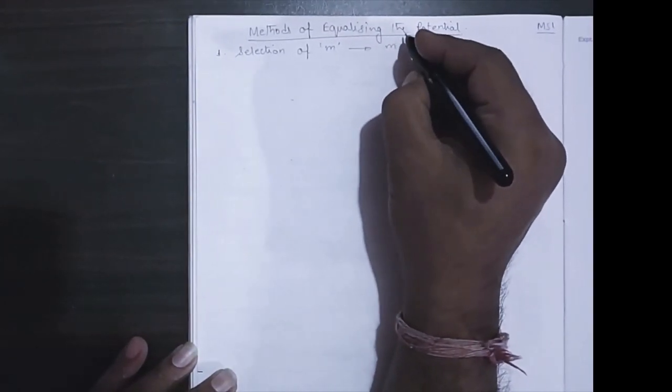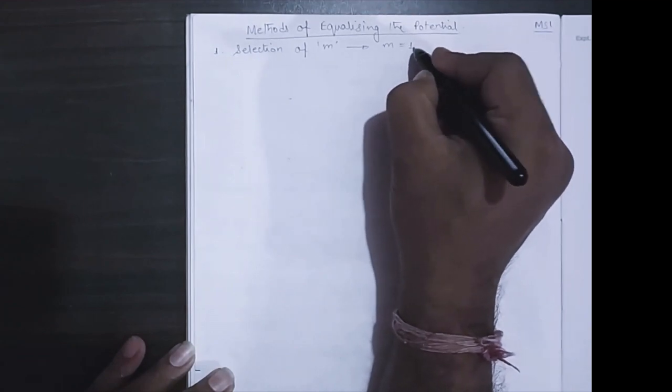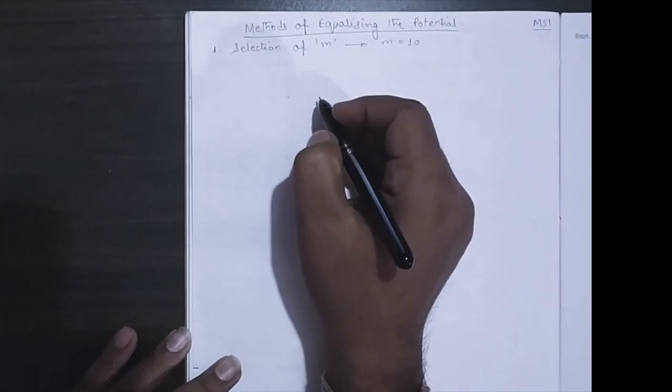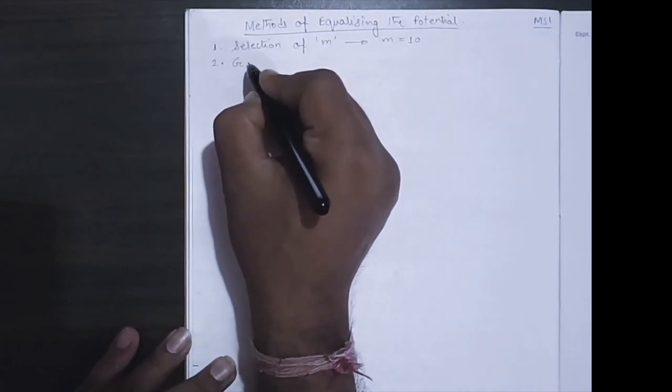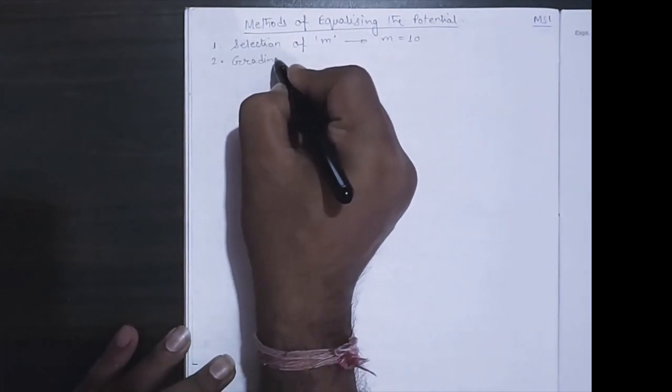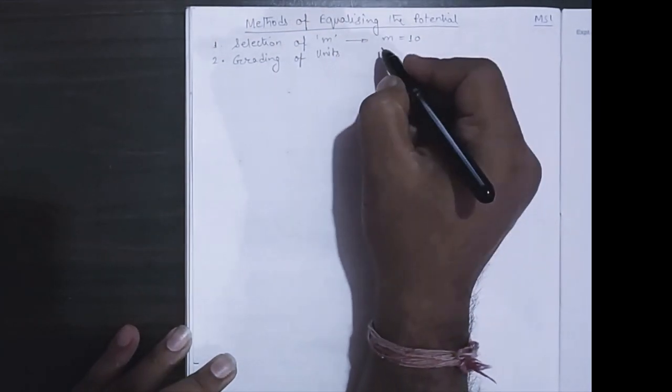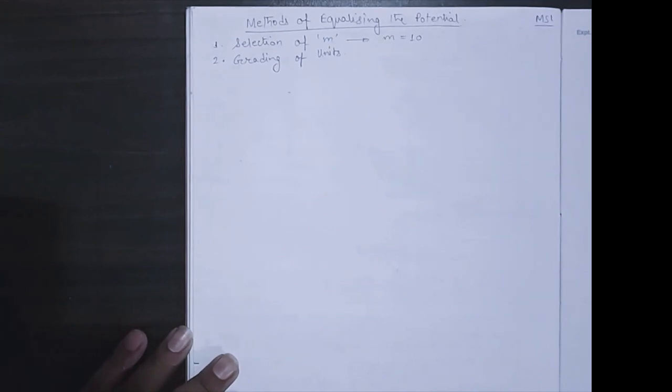As you know, this one is not very convenient and it is seen that m can be taken maximum to m equal to 10. The next one is grading of units, that is the insulator units.